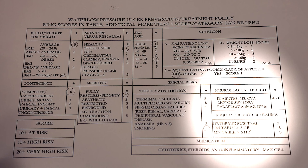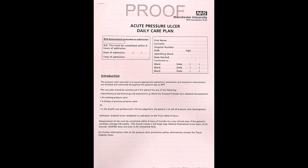Next, consider if the patient has been in theatre. If the patient has had orthopaedic or spinal surgery, this increases the risk due to the pressure and shear forces associated with orthopaedic procedures such as hip replacements. Finally, calculate the total score and plan preventative interventions as appropriate. Patients who you judge clinically or using the water load tool to be at risk should have an acute pressure ulcer daily care plan started.